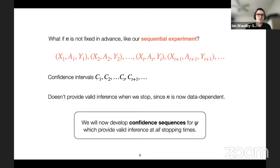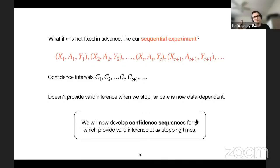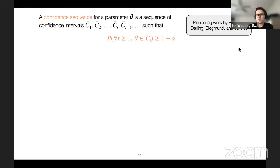What we want are confidence sequences — sequences that allow valid inference at all stopping times, data-dependent or not. This allows us to track our intervals over time and decide to keep sampling; that's perfectly fine if you use a confidence sequence. A brief primer: these were pioneered in the late 1960s and 70s by Herbert Robbins, Darling, Siegmund, and colleagues.